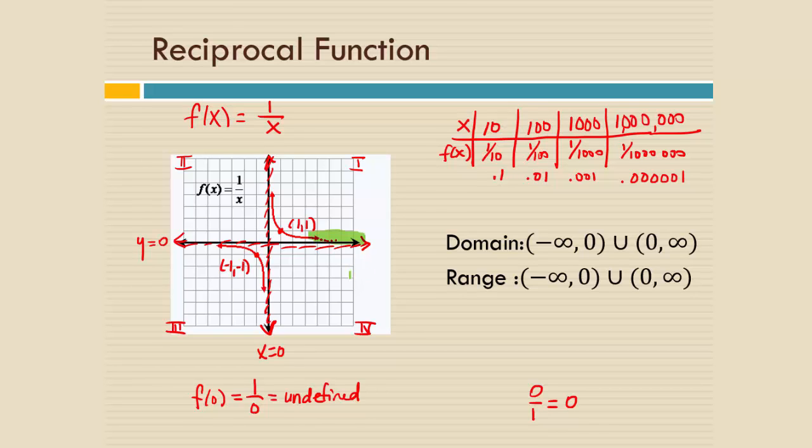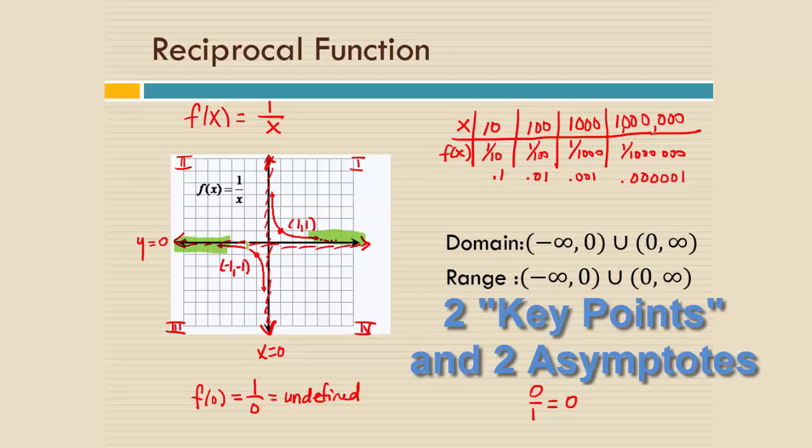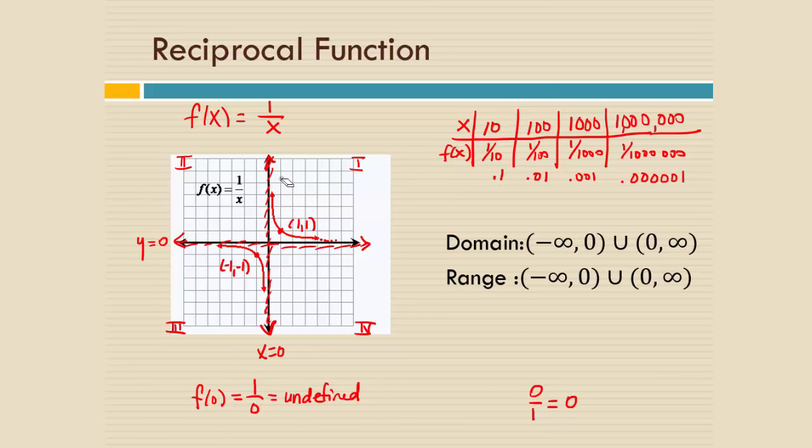But can you ever take the reciprocal of a large enough number that it actually gives you 0? No, that's not going to happen. So we put in this imaginary boundary line to show to other people that the graph is going to come very close to it and run right alongside of it. It's going to get so close that you won't be able to see the difference, but it never actually touches. And that happens in the negative direction as well. It stays just below the axis. So we see that we have these two asymptotes. So when I ask you to graph the reciprocal function, I want to see not only the two key points, but also the two asymptotes in addition to the shape of the actual function.